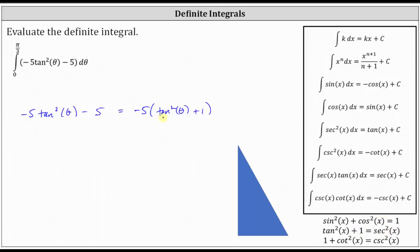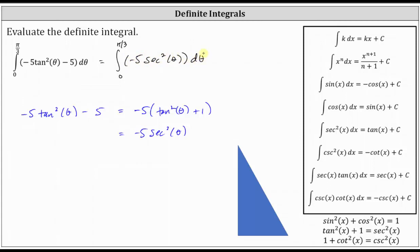Therefore, we can substitute secant squared theta for tan squared theta plus one, which gives us negative five secant squared theta. This means we can write the original integral as the definite integral from zero to pi divided by three of negative five secant squared theta. This is good news because we do have an antiderivative formula for secant squared theta.